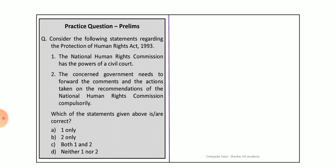Statement: The concerned government needs to forward the comment and action taken on the recommendation of the National Human Rights Commission compulsorily. This is also correct — it is binding that the government must forward its comments and actions taken on the recommendations.